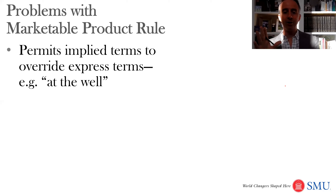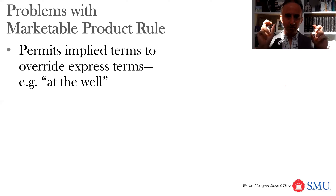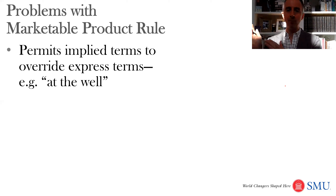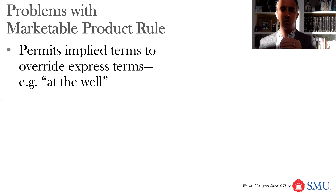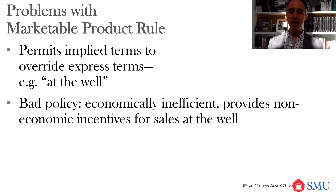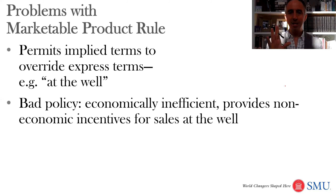What are the problems with a marketable product rule? One big problem is that it can allow implied terms to override express terms. We'll see cases where the lease says you get one-eighth of the value of what's produced at a well, and courts will say they don't care if it says 'at the well' — if they had to ship it somewhere else, then they should pay for that shipment process. So one problem with the marketable product rule is that it sometimes seems to go against the text of leases.